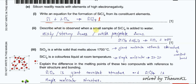Describe what is observed when a small sample of SiCl₄ is added to water. SiCl₄ added to water undergoes hydrolysis. First, you will see a white precipitate form — which is SiO₂. Second, you will see white fumes or misty/steamy fumes because HCl is produced from the reaction. So the two observations are a white precipitate and white fumes.